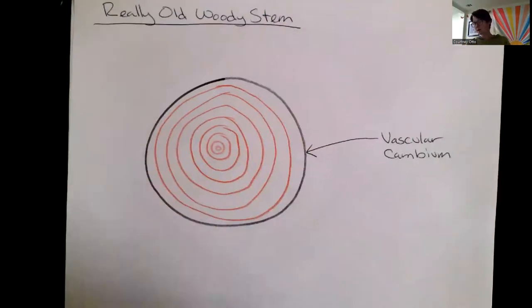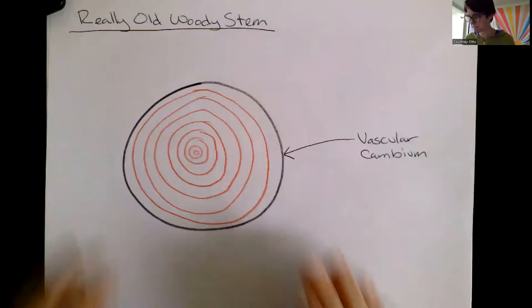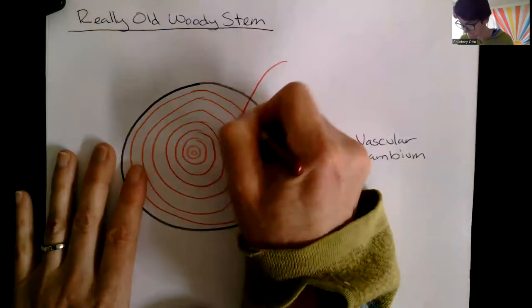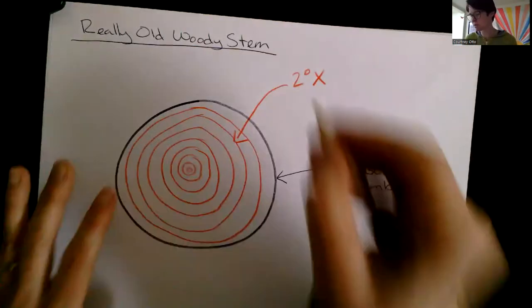Now all of that that's inside of here is secondary xylem. Well, secondary xylem is the same thing as wood.